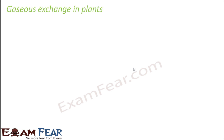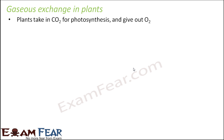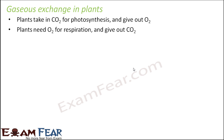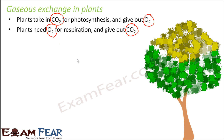For respiration to take place, gaseous exchange must happen in plants also. Plants take in carbon dioxide for photosynthesis and give out oxygen. The carbon dioxide produced by respiration is used for photosynthesis, and the oxygen produced by photosynthesis is used for respiration. So in plants, oxygen and carbon dioxide can be utilized alternatively. Plants also have structures called stomata — tiny pores on the leaves — through which gaseous exchange takes place between the plant and the surrounding atmosphere.